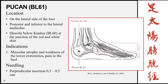The next point is Pucan, Bladder 61, located on the lateral side of the foot, posterior and inferior to the lateral malleolus. Find the lateral malleolus, then go posterior and inferior — the point is directly below Bladder 60, at the junction of the red and white skin, where the skin transitions from the sole to the normal color of the foot. Indications include muscular atrophy and weakness of the lower extremities, and pain in the heel. Needling is perpendicular insertion 0.3 to 0.5 cun.